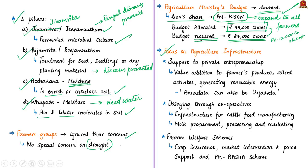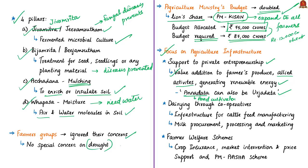The Finance Minister also mentioned a focus on agriculture infrastructure, ensuring support to private entrepreneurship in driving value addition to farmers' produce — including from the field, allied activities like bamboo and timber from hedges, and generating renewable energy. The minister noted that 'Annadata can also be Urjadata' — Annadata means food cultivator and Urjadata means power generator — implying farmers as generators of renewable energy.